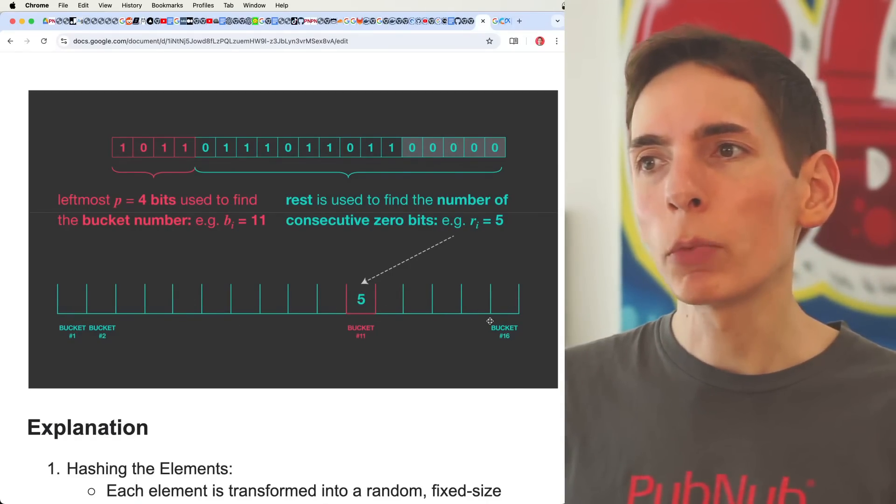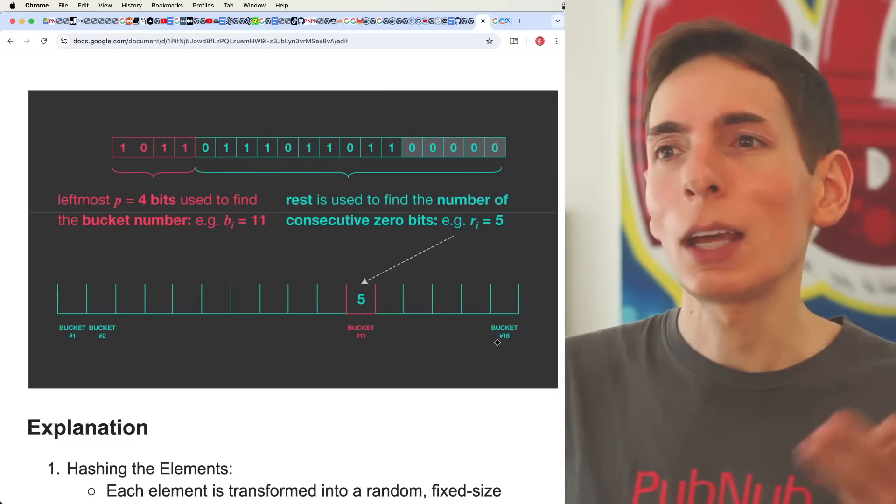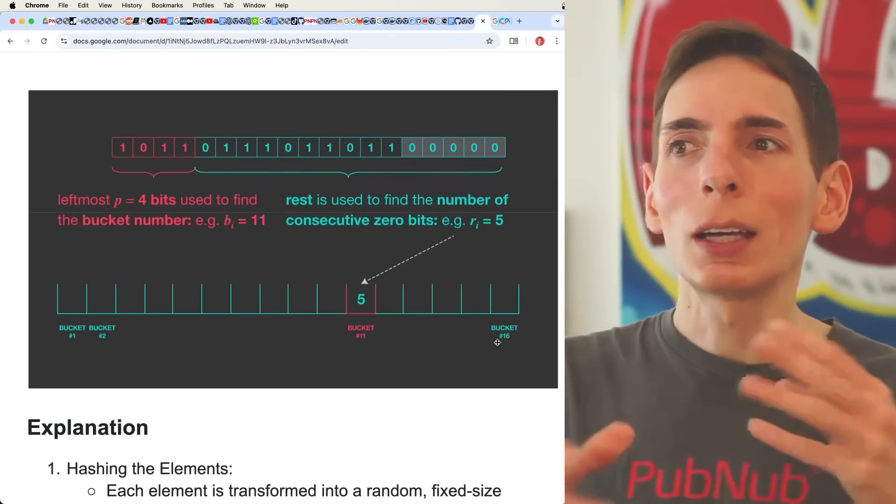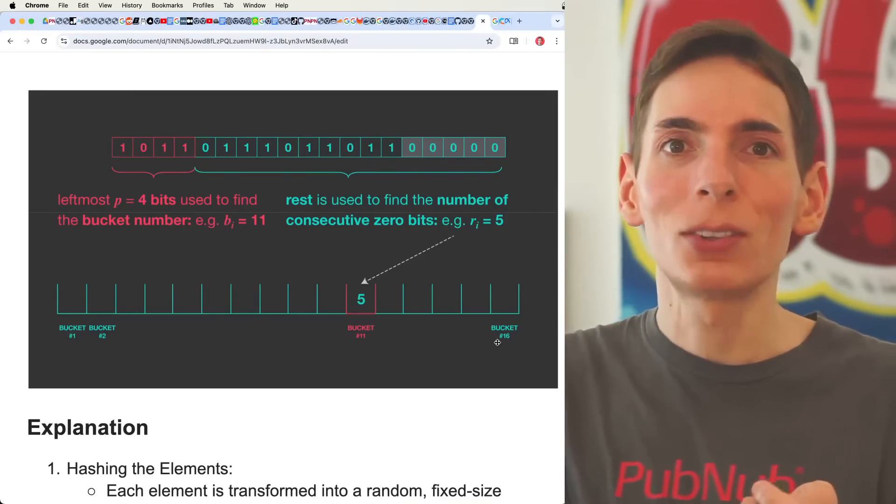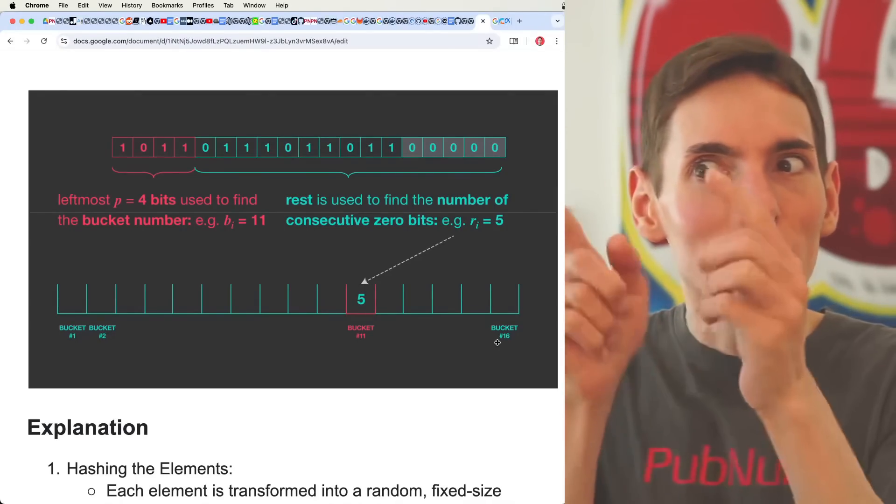So then we would sum the value and essentially get the mean, the average. And then that would give us the sort of ideal, the probabilistic number of elements in this set. That's it. And we're really just dealing with this array. It's really simple.